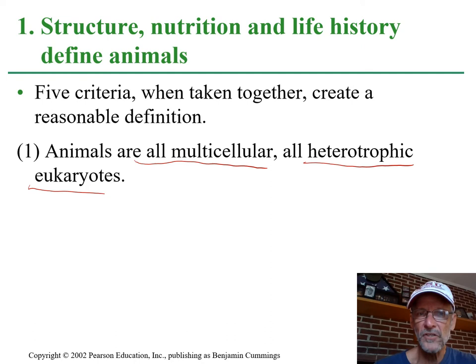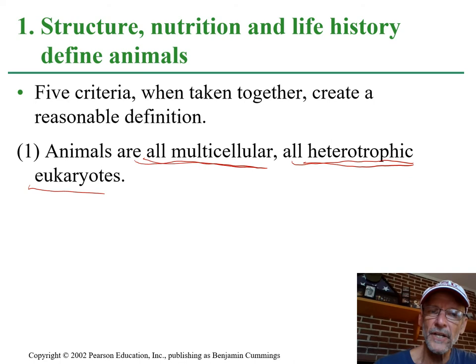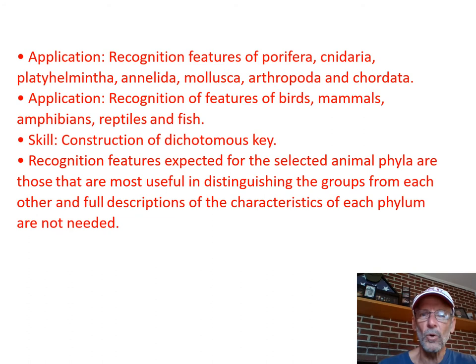You have unicellular eukaryotes like amoebas and parameciums. Animals are all heterotrophic and all multicellular. Plants are all multicellular and almost all of them are autotrophic. There are a few parasitic plants that don't do photosynthesis — we'll ignore those.